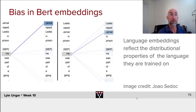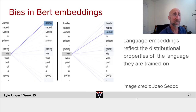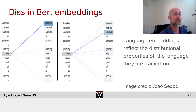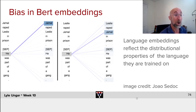Similarly, BERT embeddings have bias which reflects the language they were trained on. We take a sentence — not a very nice one — 'Jamal raped Leslie in prison. He was part of a gang.' You can see where the attention head goes: 'he' attends in self-attention to Jamal, which makes sense, even though both Jamal and Leslie are male names.